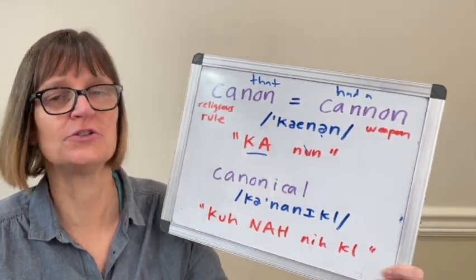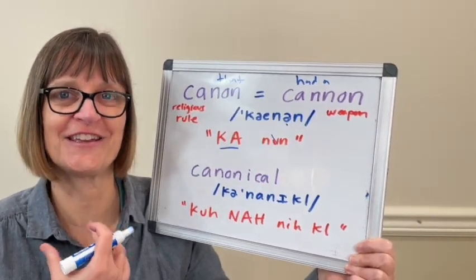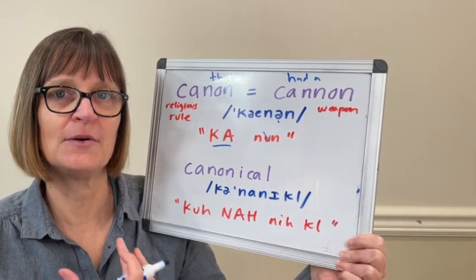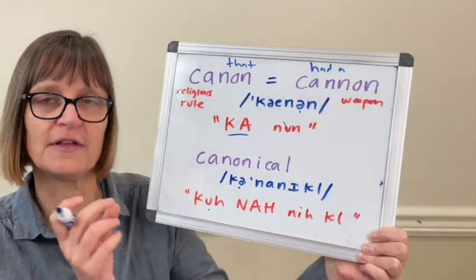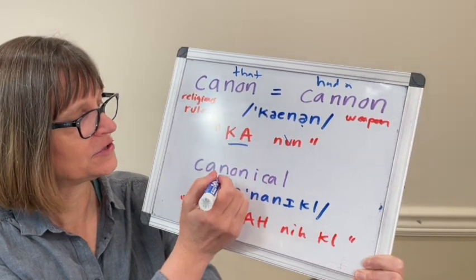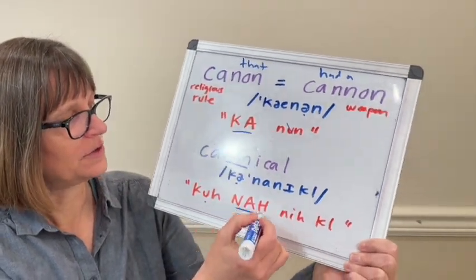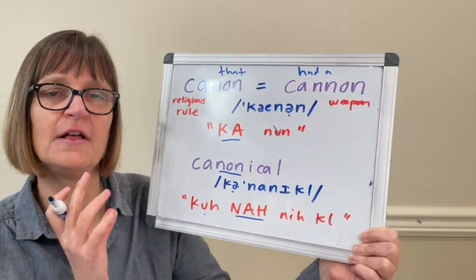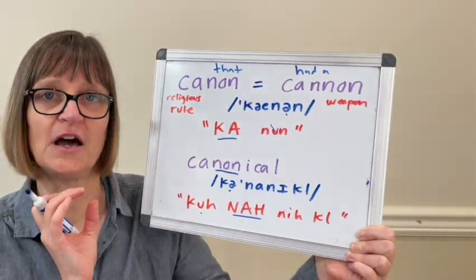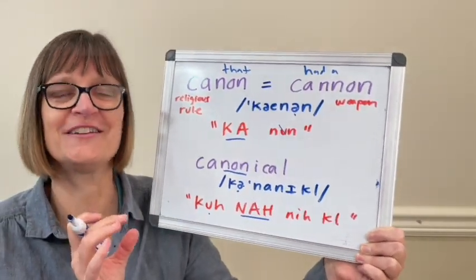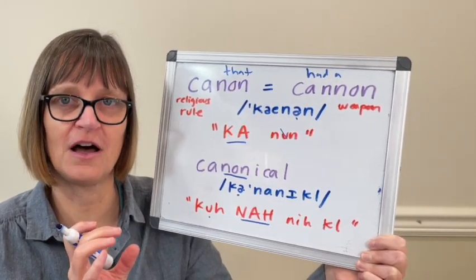But when we change to canonical, the syllable stress changes and our vowel sounds change. Now it's our letter A that has the reduced schwa that sounds like 'uh,' because we stress on the 'non' syllable. In canonical, the letter O says the 'ah' sound. It's very typical for English that in a stressed syllable, letter O will say 'ah.'